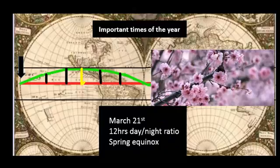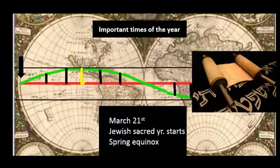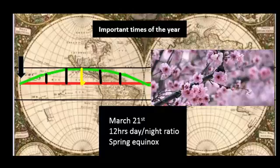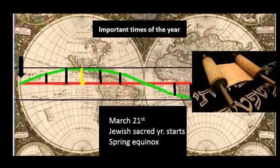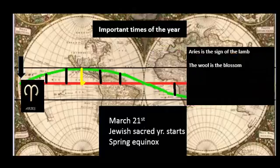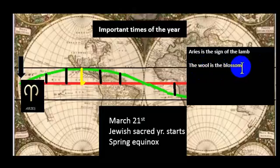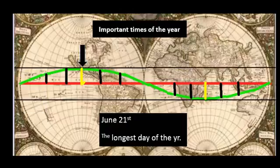Another thing that happens during the spring equinox is the Jewish sacred year starts. Aries happens here, the sign of the lamb and the ram, and the wool is the blossom. The Japanese call this the blossom season. Moving right along, June 21st is the longest day of the year.